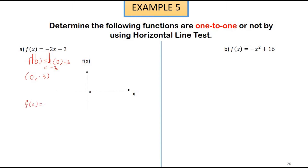For another point, let's say f(x) = 0. Then we have -2x - 3 = 0, which gives x = -3/2. So we have another point: (-3/2, 0).